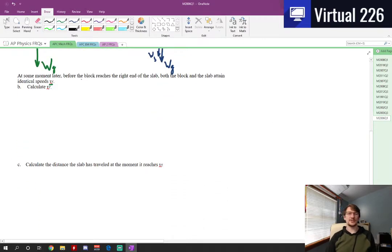In Part B we do see this speeding up at some moment later, but before the block up top reaches the far end of the slab, both the block and the slab obtain identical speeds. They want us to calculate that identical speed there. Well the way we can do this is to conserve momentum. We initially start with some mass at some velocity, so that's a momentum there. And this initial mass that is moving is just the mass of the block. So a half kilogram and it's moving at four meters per second. There are no other initial momentums there because the slab is stationary.